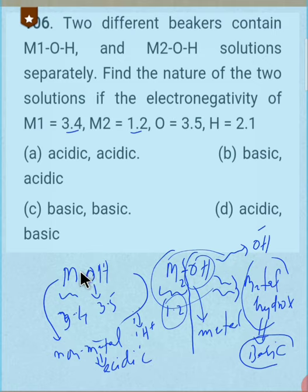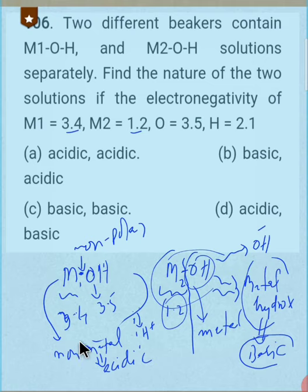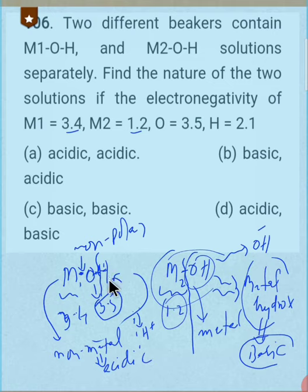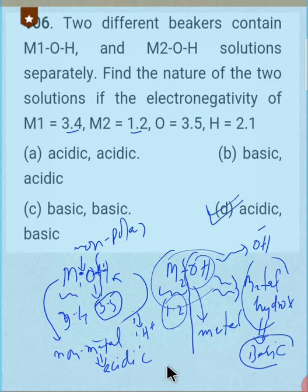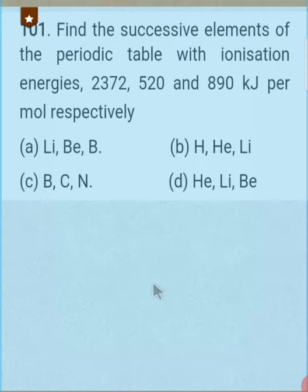In contrast, for M₂OH, the large electronegativity difference between M₂ and O makes the M₂–O bond very polar, so that bond breaks when dissolved in water, producing OH⁻ ions — making the solution basic. So M₁ is acidic and M₂ is basic. The correct option for this question is D.